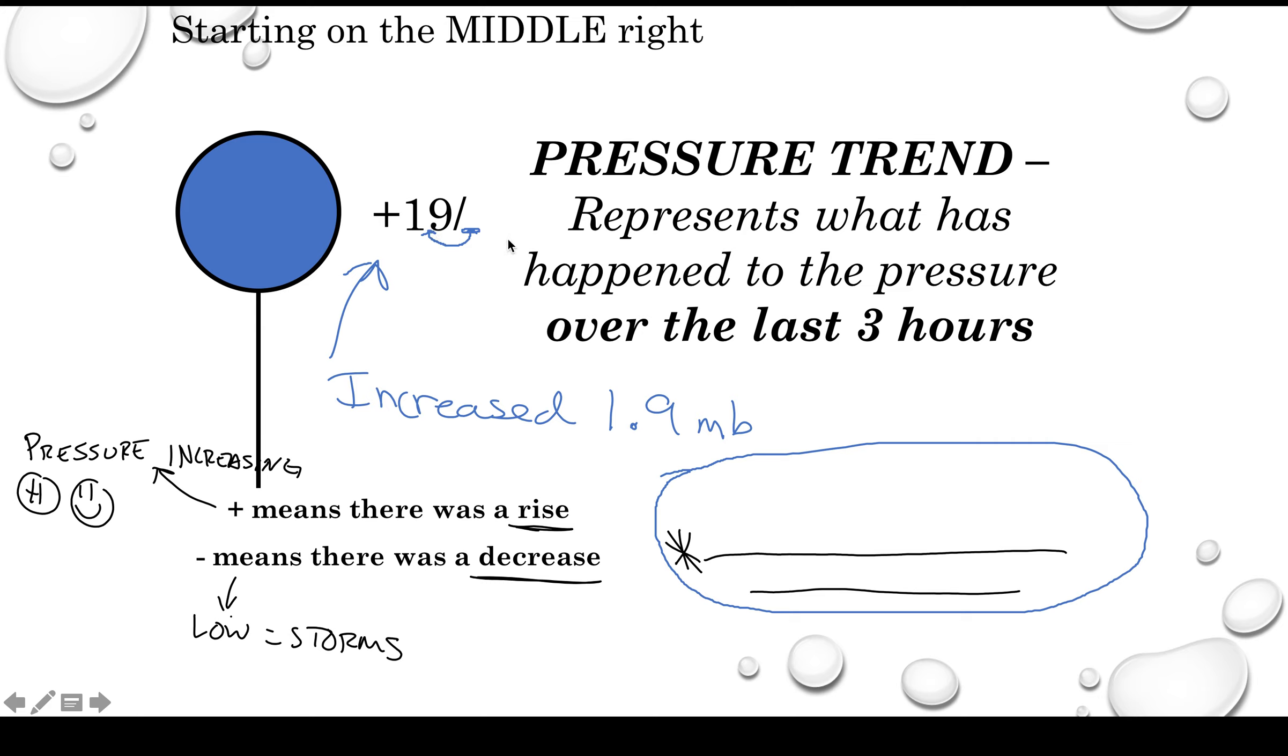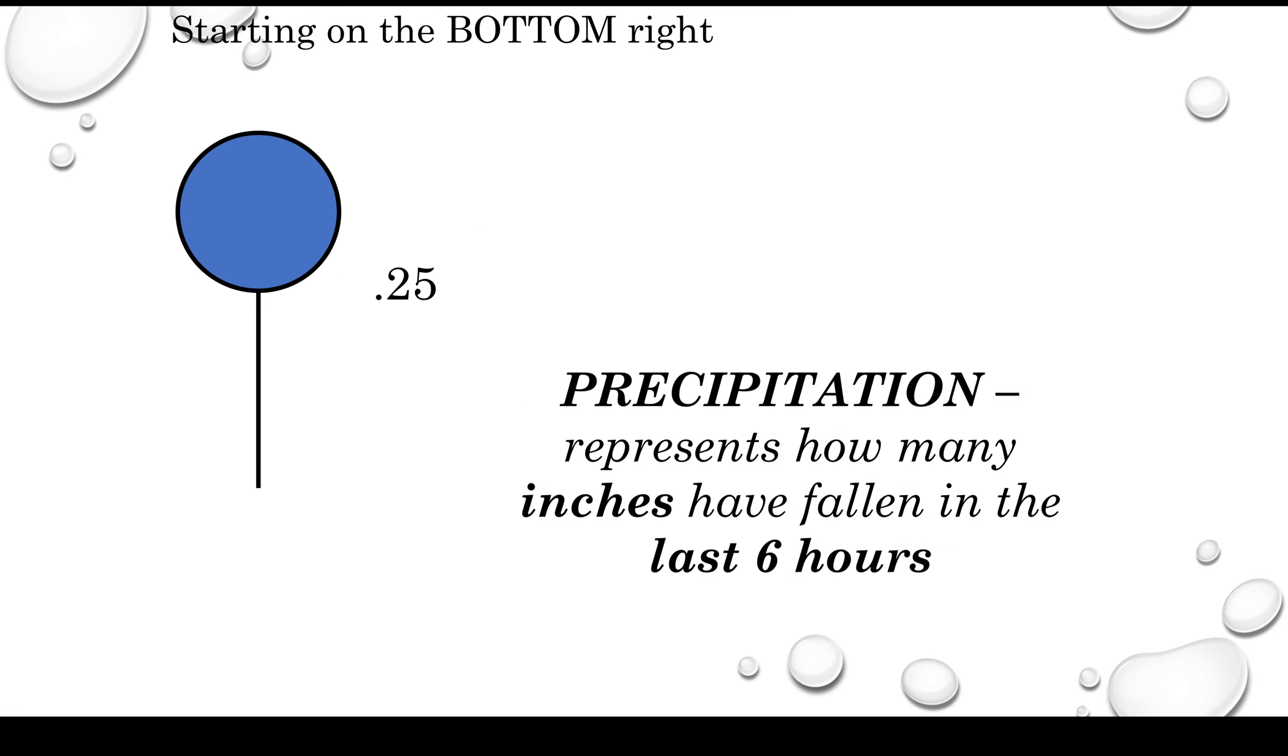So don't worry about having this blank for your lab. This is more important for the questions you're going to do. And just like before, this tells us what the increase has been over the last three hours. Now we need to move the decimal, so it hasn't increased 19 millibars; it actually increased only 1.9 millibars. Again, a positive means there was a rise; a negative means there was a decrease. Remember that if pressure is increasing, weather gets nicer. If pressure is decreasing, it tends to get rainy, cloudy, and a little crummy out.